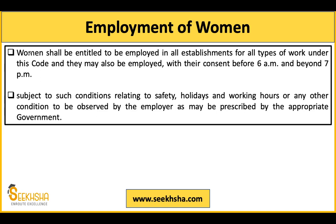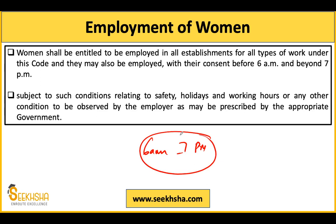Women can be employed between 6 AM and 7 PM. After 7 PM and before 6 AM, women can also work in night shifts, but their consent is required. You cannot force women to work in the night shift. Additionally, if women are employed in night shifts in a factory, you must ensure proper safety conditions and regulated working hours.